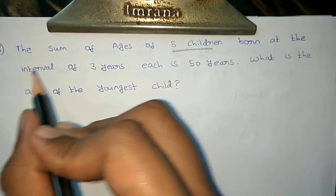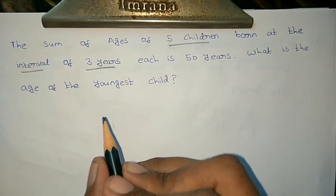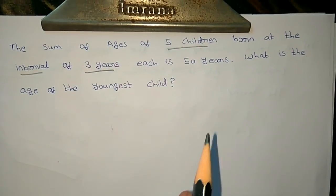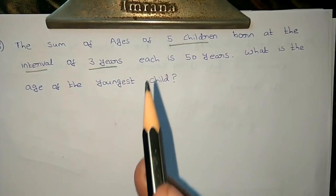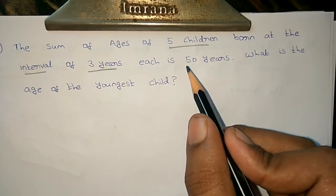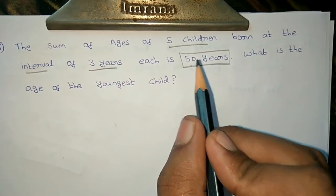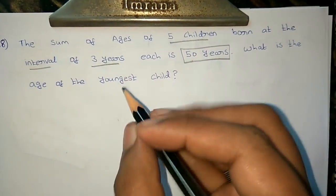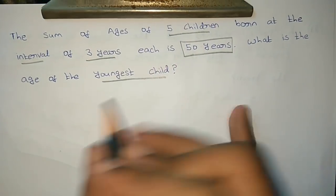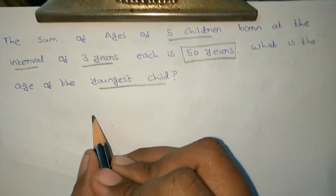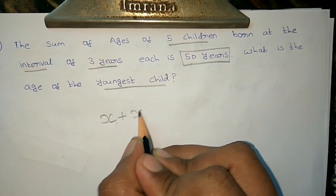They say the age difference is given. If you add the ages, the total is 50. What is the age of the youngest child? Let the age of the youngest child be x. Then the ages are x, x plus 3.